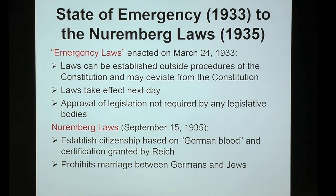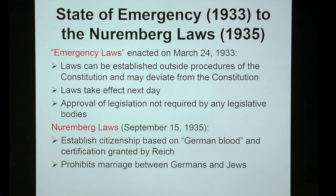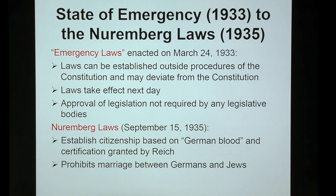Two days later, emergency laws were enacted in 1933 — extraordinary because they eliminated checks and balances. Just like the United States, Germany had three branches: executive, legislative, and judiciary. They checked each other's power. No longer. Laws could now be established outside the procedures of the Constitution and could deviate from it. Laws took effect the next day with no approval from any legislative body required. These new laws trumped the Constitution, existing because of the state of emergency.